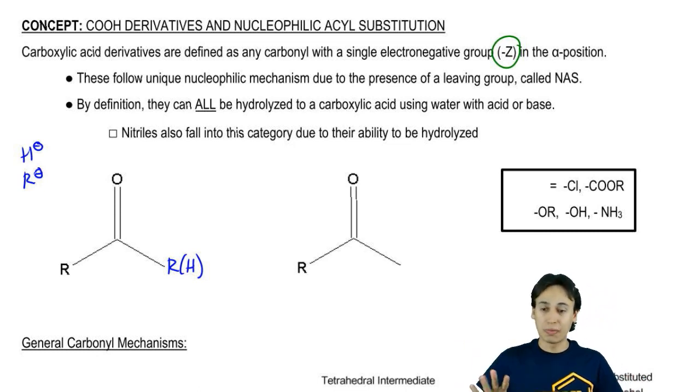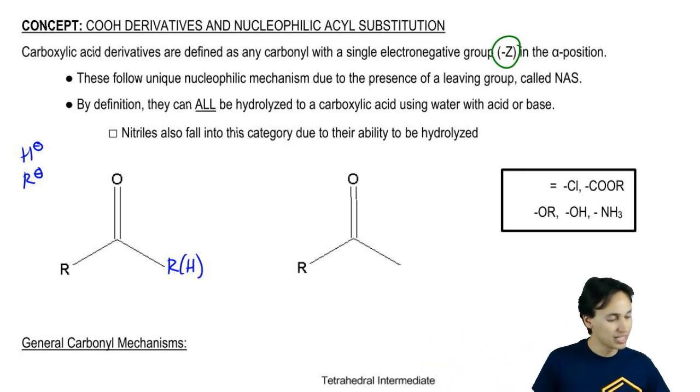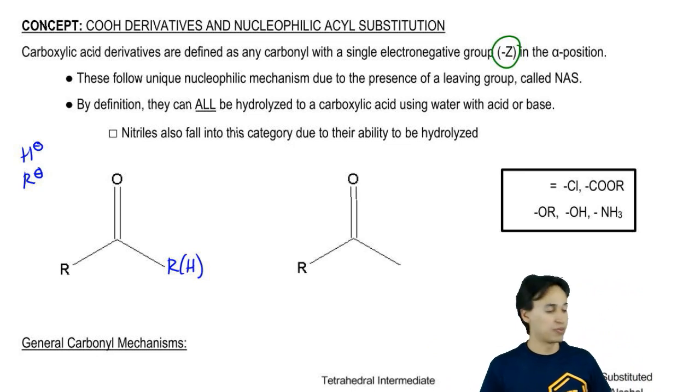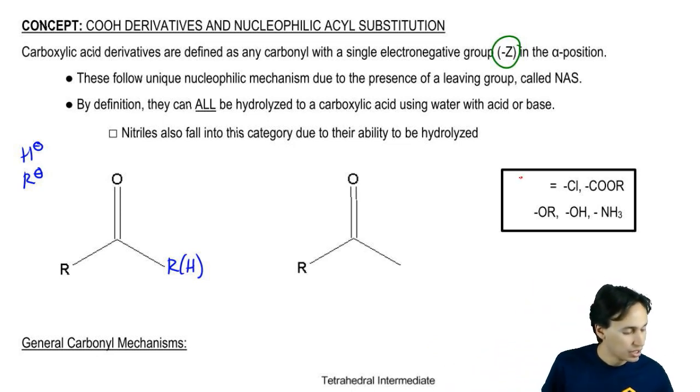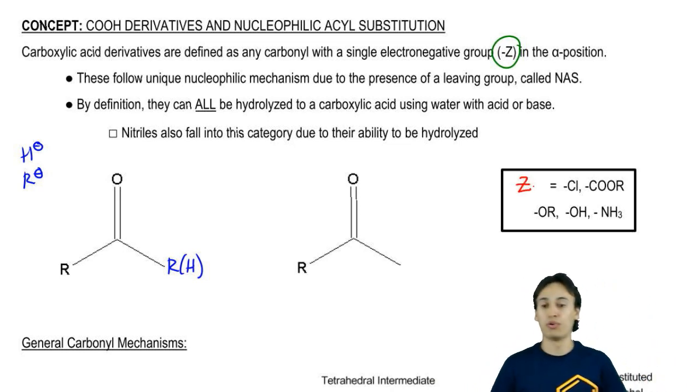What we find is that there's a certain mechanism that they tend to undergo, which we'll see in a second. Whereas Z groups are defined as something that's slightly electronegative even to very electronegative. Here are all the Z groups that we're going to be working with in this section. We've got chlorine, we've got basically an ester OR, OH, NH2.